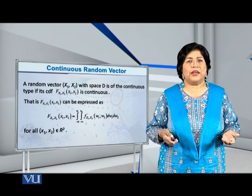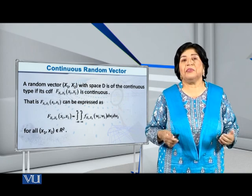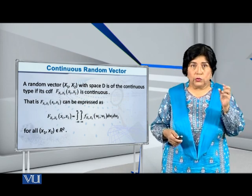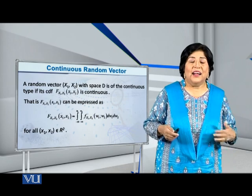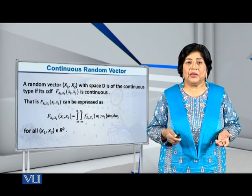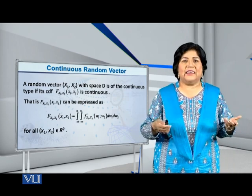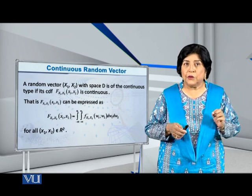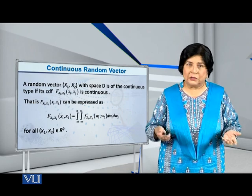Now it is actually quite simple — it is simply the extension of what we have in the case of a single continuous random variable. That is the same thing we have written in the case of a single variable for capital X1 and capital X2, which tells us that basically we are dealing with the random variables capital X1 and capital X2.